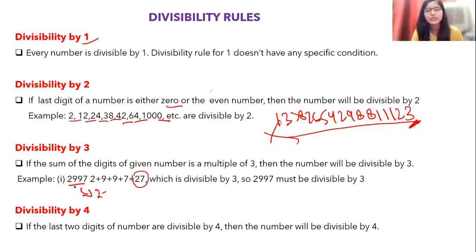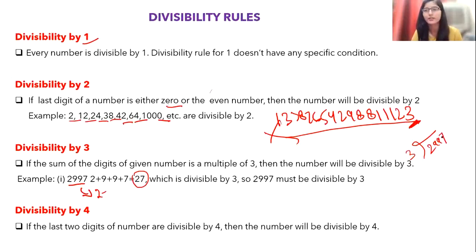If you're aware of this technique you simply sum the digits to check divisibility by 3, whereas without it you'd manually divide 2997, which takes much more time. In an exam you need to solve questions in one minute or less, so these concepts matter a lot.